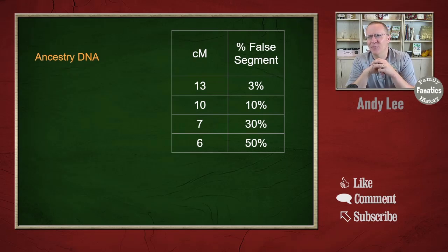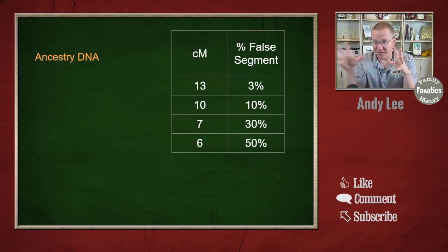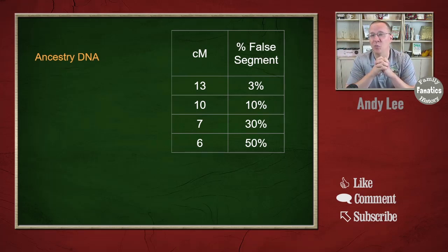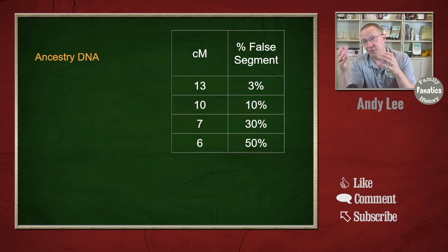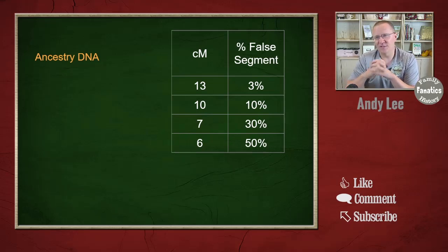AncestryDNA didn't have a nice paper like Family Tree DNA, so I had to extract some of this from different graphs and explanations — it may not be exactly the same, but I think it's close enough. The trend is the same: at 13 centimorgans they're seeing about three percent false segments, going down to six centimorgans where it's about 50 percent false segments.